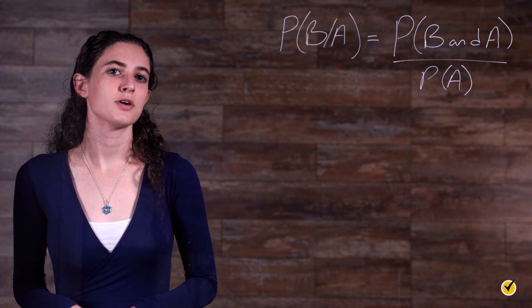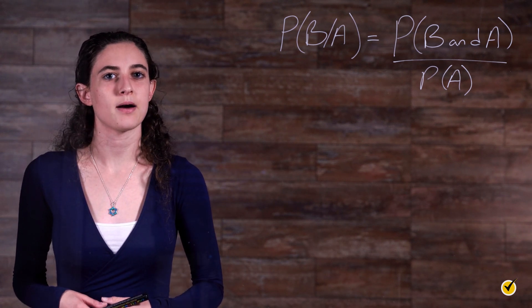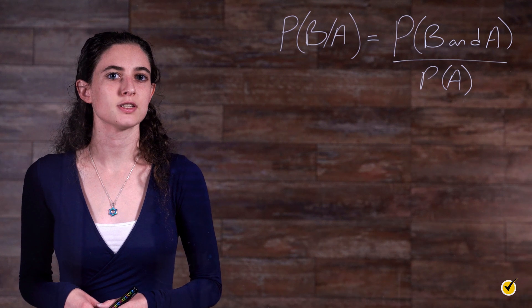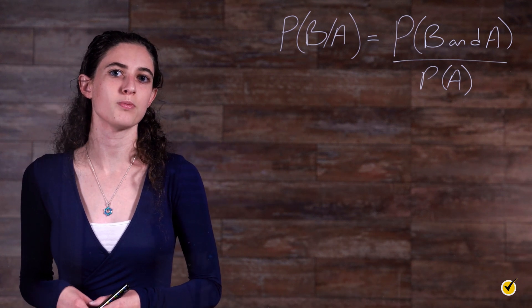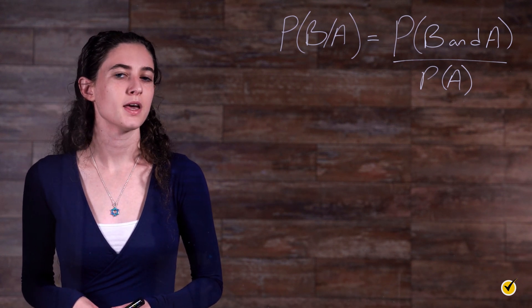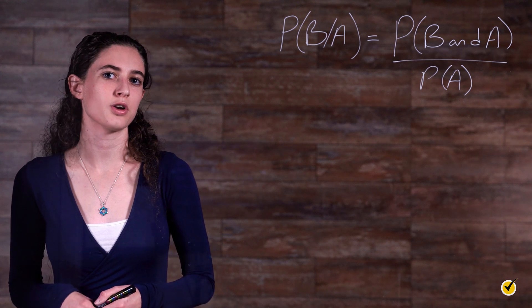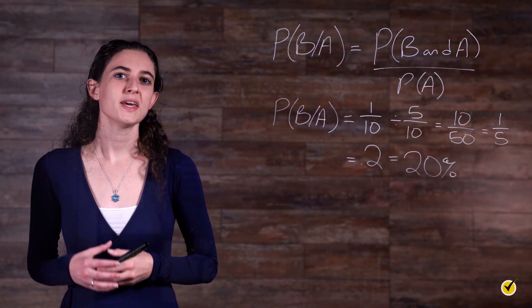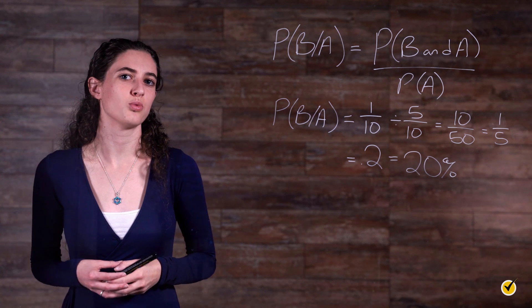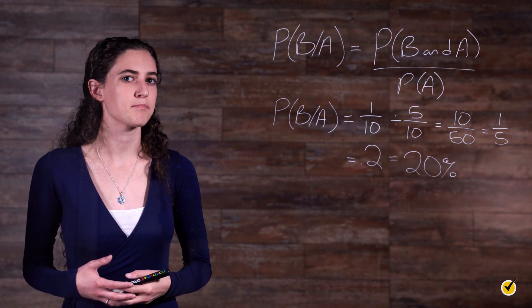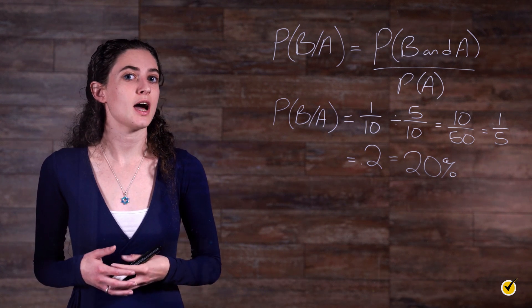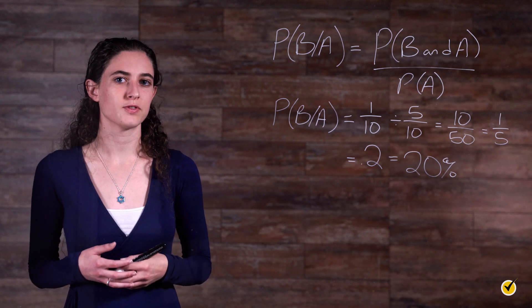So in our sample problem, the P of B and A happening is the 10 houses out of 100 that were sold with both a garage and swimming pool. This fraction can be written as 1 over 10. The P of A is the probability of a house being sold with a garage, event A, which is 50 houses out of the 100, or 5 out of 10.